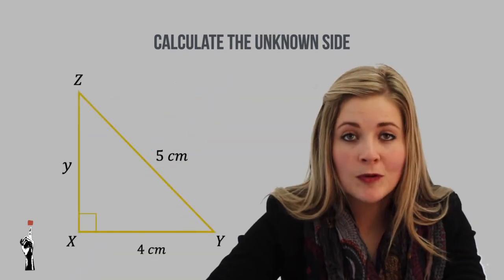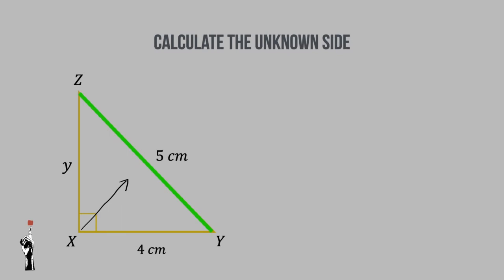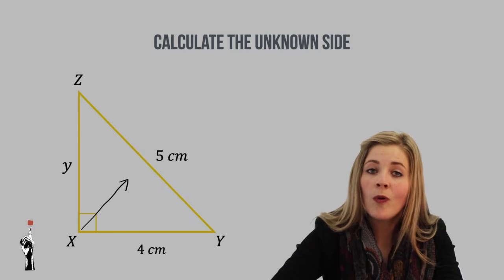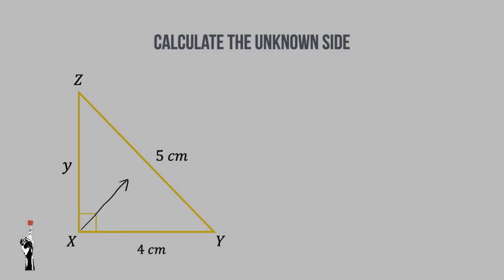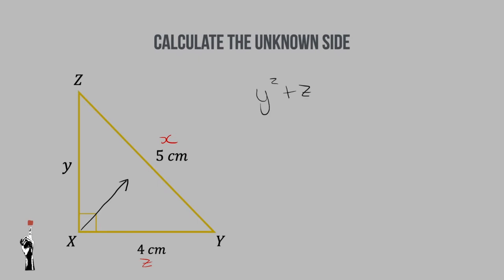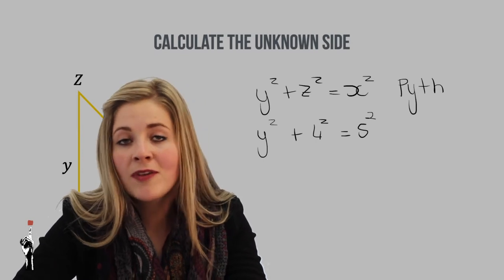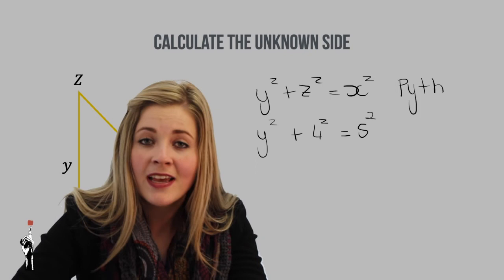Let's do another example. First, find the hypotenuse — it is always opposite the 90-degree angle, making side ZY the hypotenuse. We can call this side small letter X, since it is opposite angle X. Opposite angle Z is small letter Z, and opposite angle Y is small letter Y. Writing the formula: Y squared plus Z squared equals X squared. Note that this time the hypotenuse is not the unknown — we can be given any two sides and calculate the third, whether it is the hypotenuse or not.